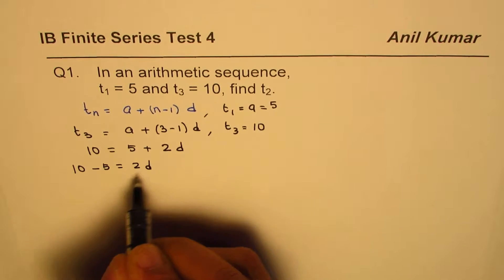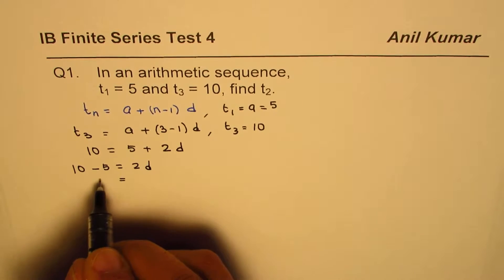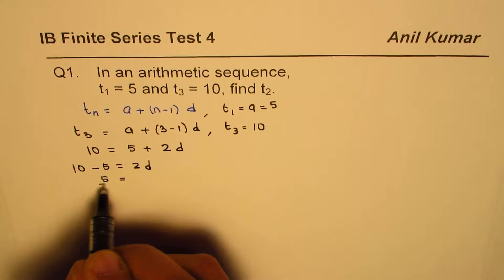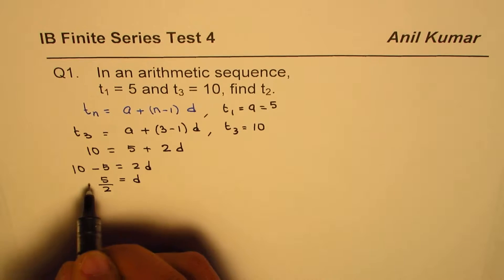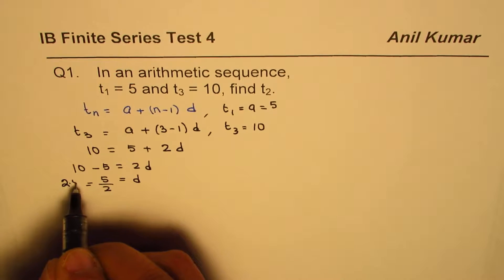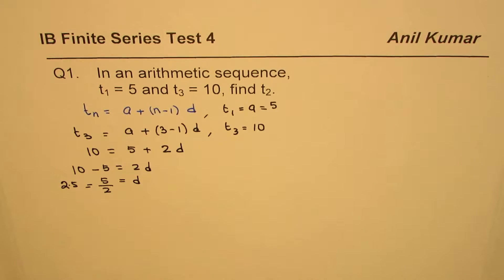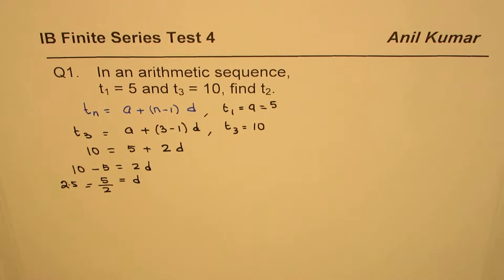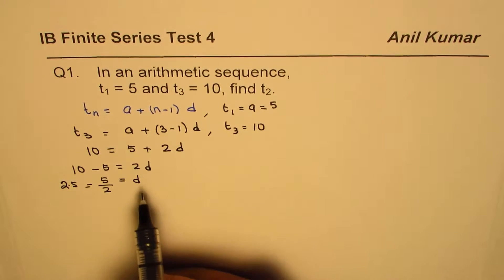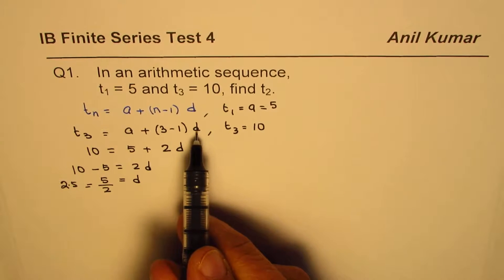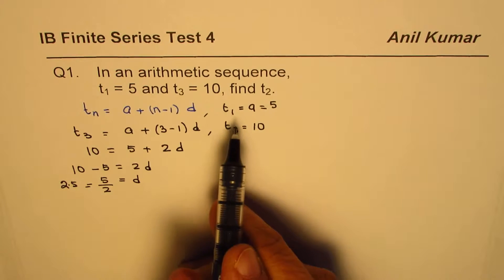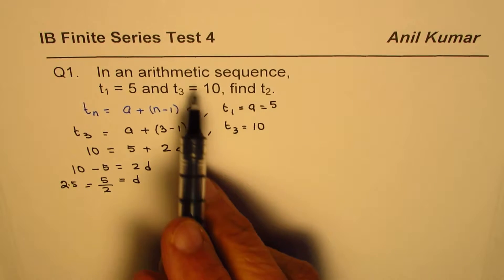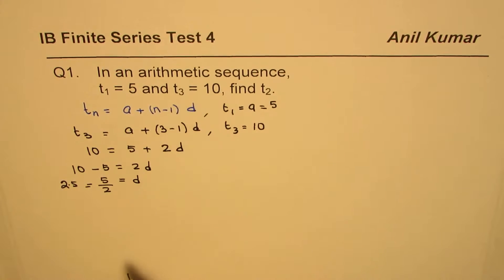Rearranging: 10 minus 5 equals 2d, so 5 divided by 2 equals d, which gives d = 2.5. Once you know d and you already know a, you can find any term of this arithmetic sequence.